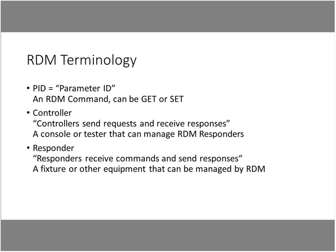RDM is based around sending commands referred to as PIDs, or Parameter IDs. An RDM command typically has two different formats: a GET — getting information from some device — and a SET — telling the device to do something specific, like alter its configuration. Those GET or SET commands are sent from a controller, which sends requests and receives responses back from something called responders. Typically a console is what we think of as a controller, and a responder is a fixture or equipment managed by RDM. In an RDM network there is a single controller and a number of responders.